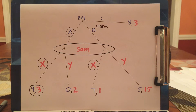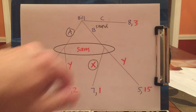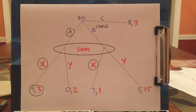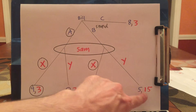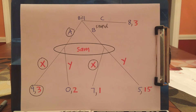Let's see how the existence of C changes the outcome. What C does is render B stupid — what I call stupid, other game theorists call dominated. If Bill plays C, he's guaranteed an 8. If he plays B, he gets 7 or 5, depending on what Sam does. 8 is obviously better than 7 or 5. So there's no way that Bill is ever going to play B given the existence of C. This doesn't mean that Bill is going to play C, but it does mean that he should never play B.